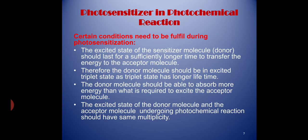Certain conditions need to be fulfilled during the photosensitization process. The excited state of the donor molecule should last for a sufficiently long time to transfer energy to the acceptor molecule. Therefore, the donor molecule should be in the excited triplet state, as the triplet state has a longer lifetime. The donor molecule should also be able to absorb more energy than what is required to excite the acceptor molecule. The excited state of the donor molecule and the acceptor molecule undergoing photochemical reaction should have the same multiplicity.